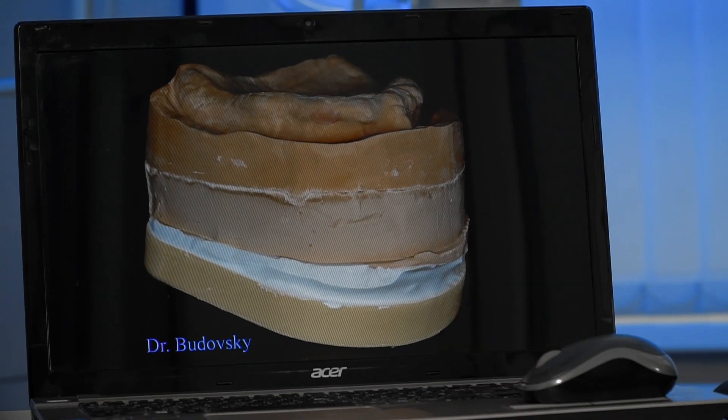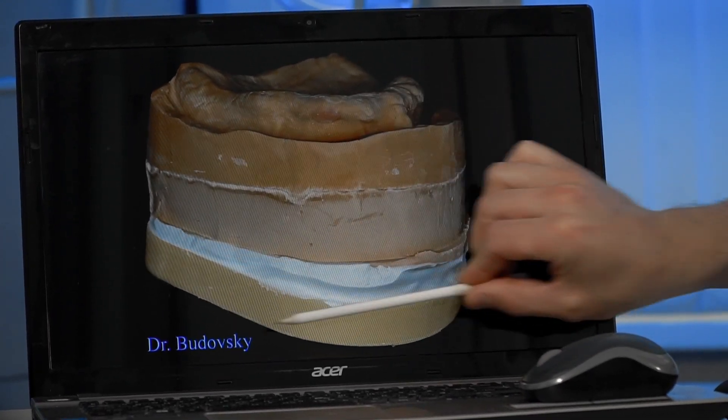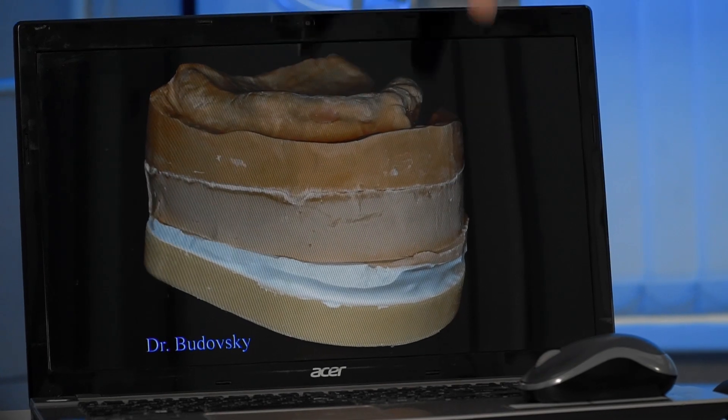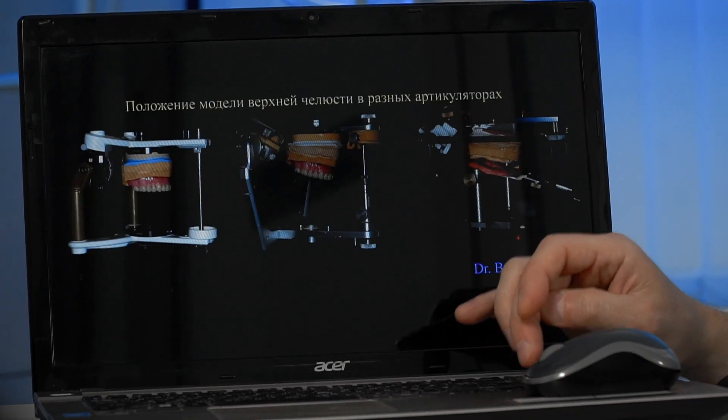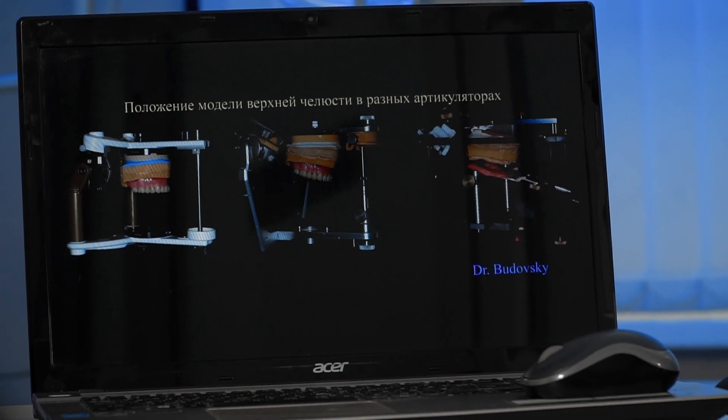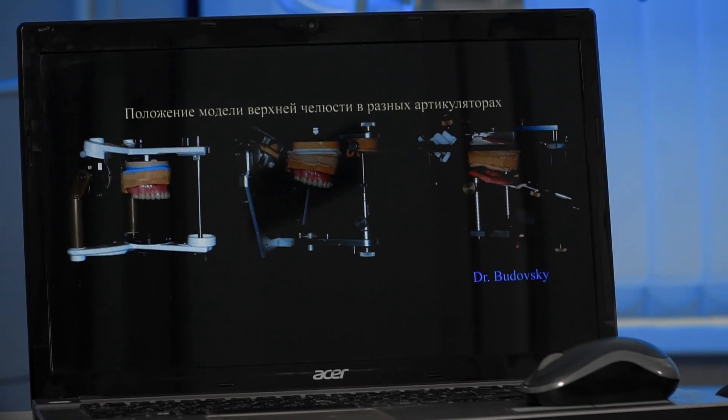You see, I get a demountable basement. There is a part I can remove, that is a part with the teeth and our prosthesis, and the second part which is directly mounted to the upper arm of the articulator.